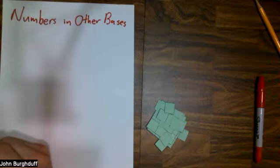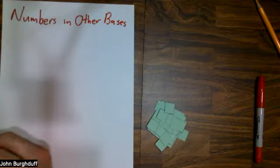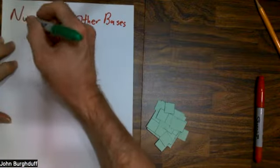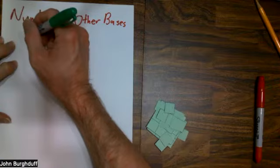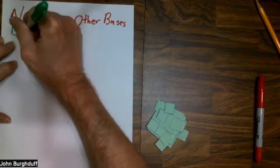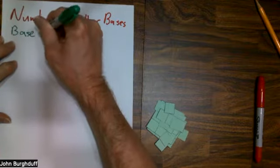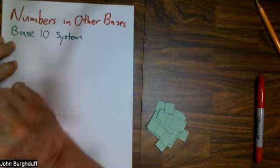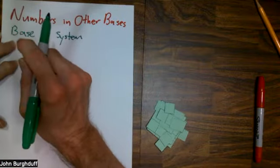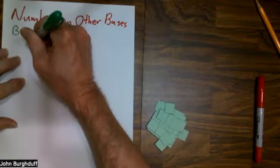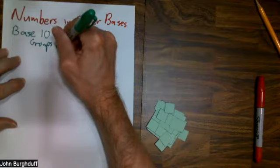Hi, this is Dr. John Bergdorf. In this video, we're going to explore numbers in other bases. We are familiar with the whole numbers that we generally use, also known as Hindu-Arabic numerals. Those numbers form what we call a base 10 system. And the idea of base 10 is that whenever you gather 10 of anything, you put them into a group.